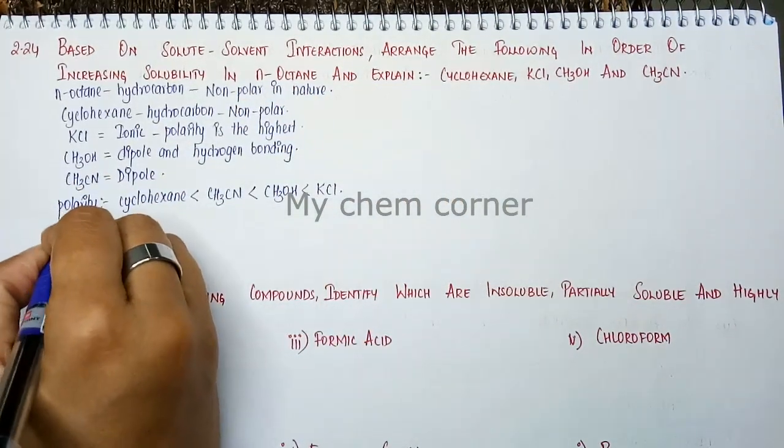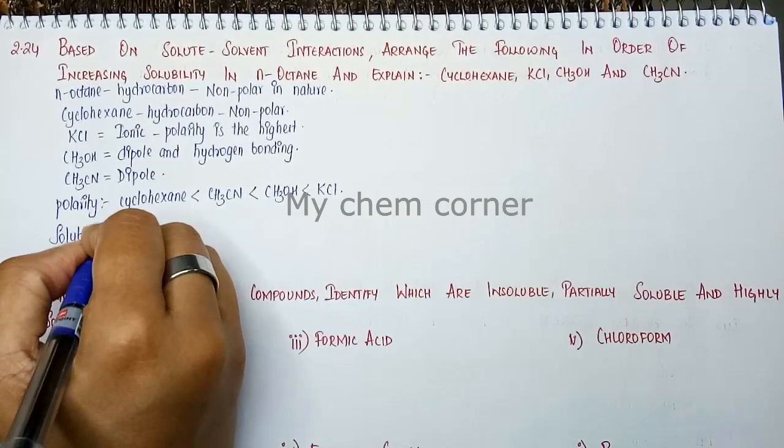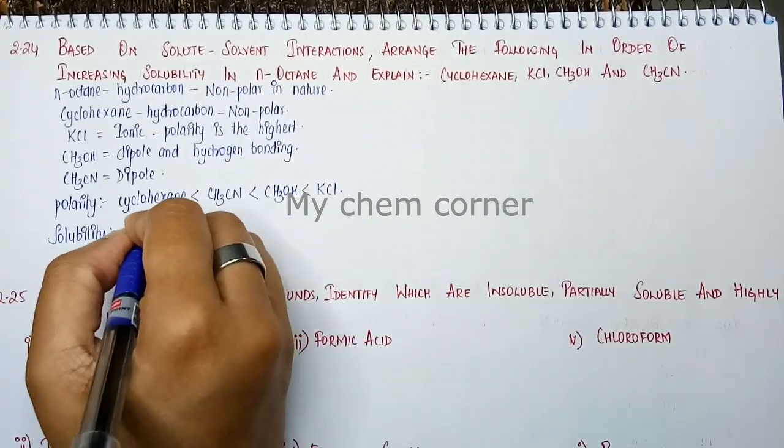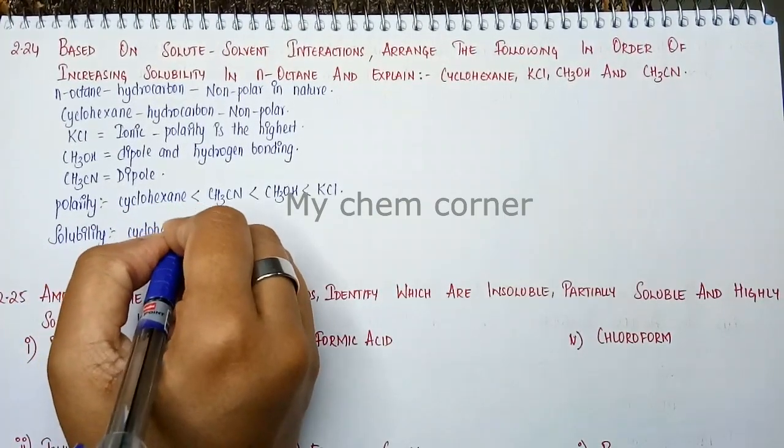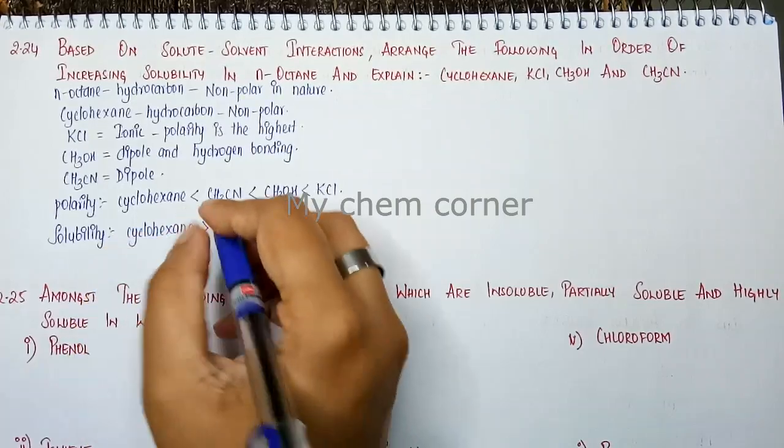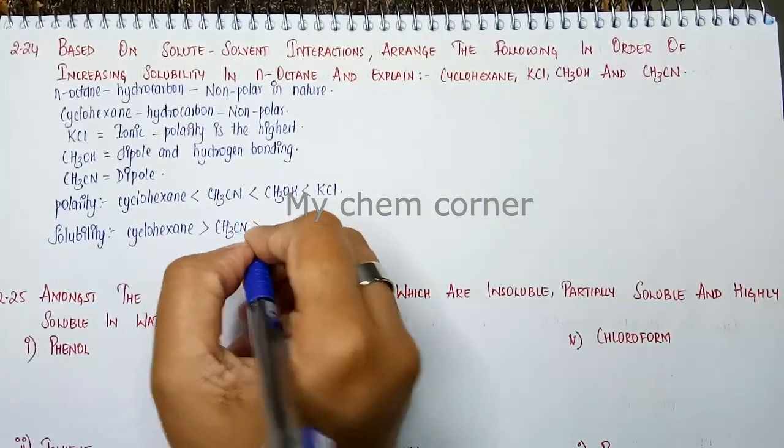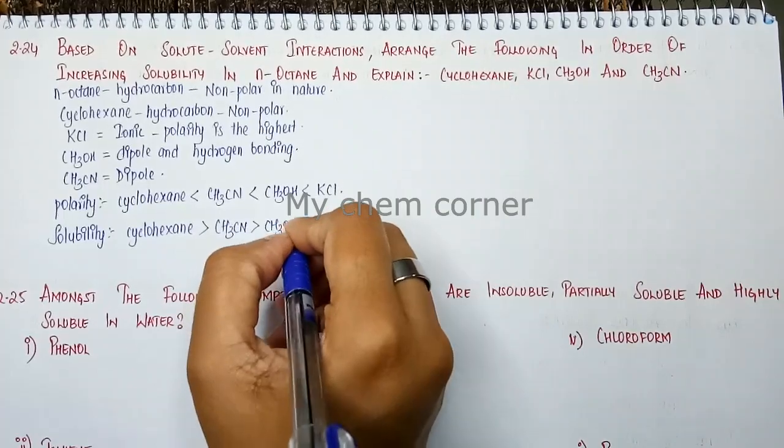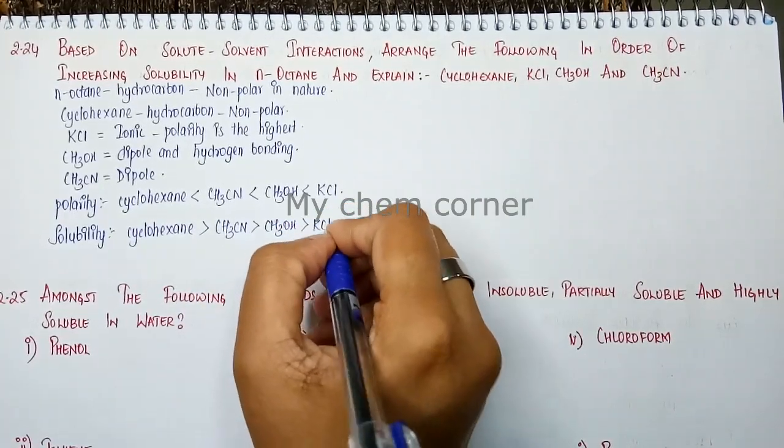When you write solubility, cyclohexene, which is non-polar, will be most soluble, followed by CH3CN, then CH3OH, and finally KCl with the least solubility.